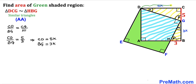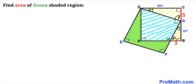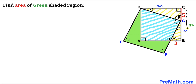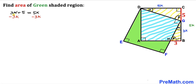Now let's solve for K. Side CD is 5K and segment BG is 3K. Since square ABCD has all equal sides, if CD is 5K then BC is also 5K. We also know that the whole length BC equals 3K plus 5. So we write 3K + 5 = 5K. Subtracting 3K from both sides gives 2K = 5, so K = 5/2.